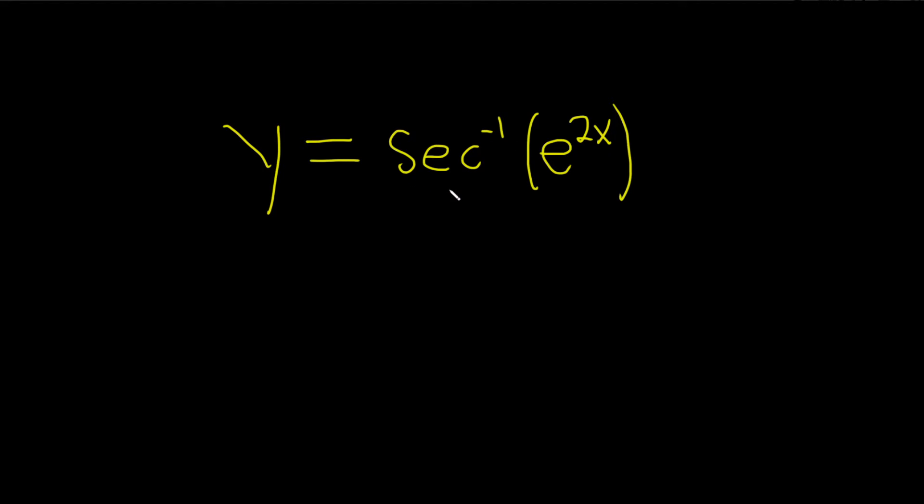To do this, we need to know the derivative of the inverse secant or arc secant. The formula for the derivative of inverse secant is a little bit strange. The derivative with respect to x of secant inverse of x equals, so you get a 1 up top,